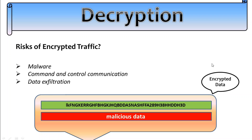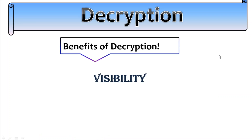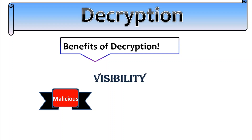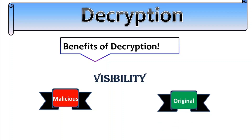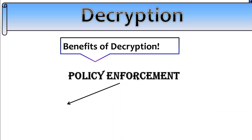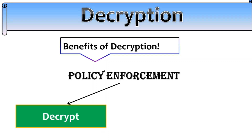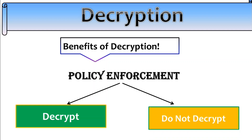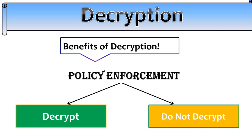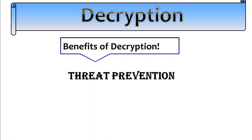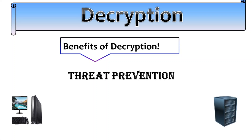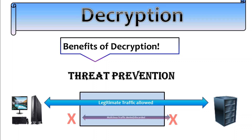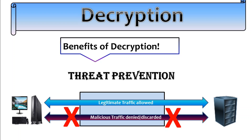There are some key benefits of decryption. First is visibility — it provides visibility into encrypted traffic to block potential threats. Next is policy enforcement — we can apply security policies based on decrypted content, ensuring a more comprehensive security posture. Last but not least is threat prevention — it detects and prevents threats that may be lurking within encrypted communication channels.